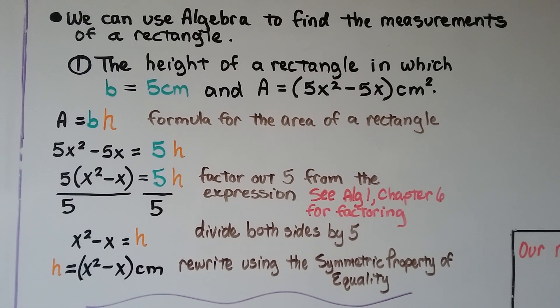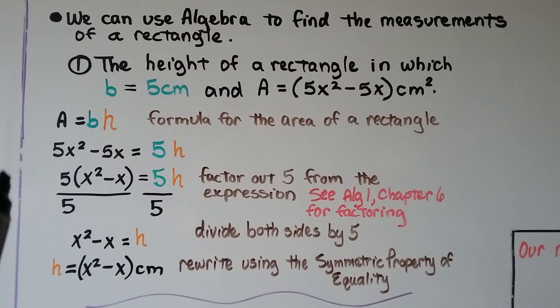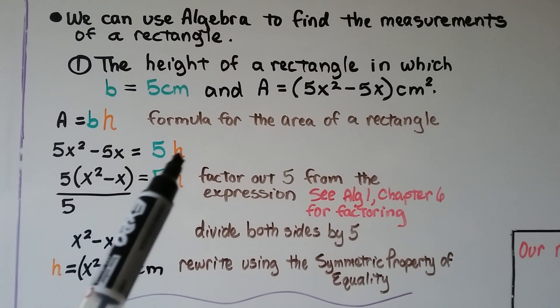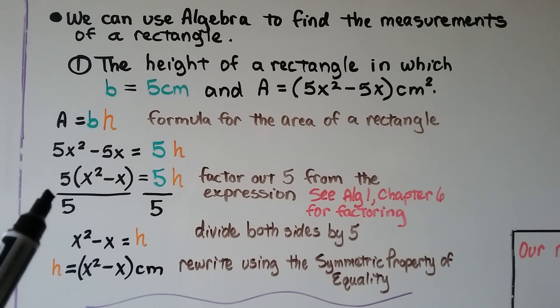We can use algebra to find the measurements of a rectangle. The height of a rectangle in which b is equal to 5 centimeters and the area is equal to 5x squared minus 5x centimeters squared. Well, the formula for the area of a rectangle is the area is equal to the base times the height. We can see what the area is, so we set that for a. And our base is 5, so we have 5x squared minus 5x equals 5h.